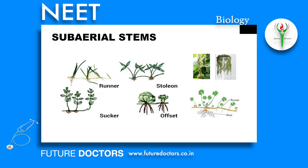Climbers have a weak and flexible stem which climb up a support with the help of certain clasping and clinging structures. The second type is Prostrate Weak Stems — these weak stems take support of the ground for spreading as growth occurs.